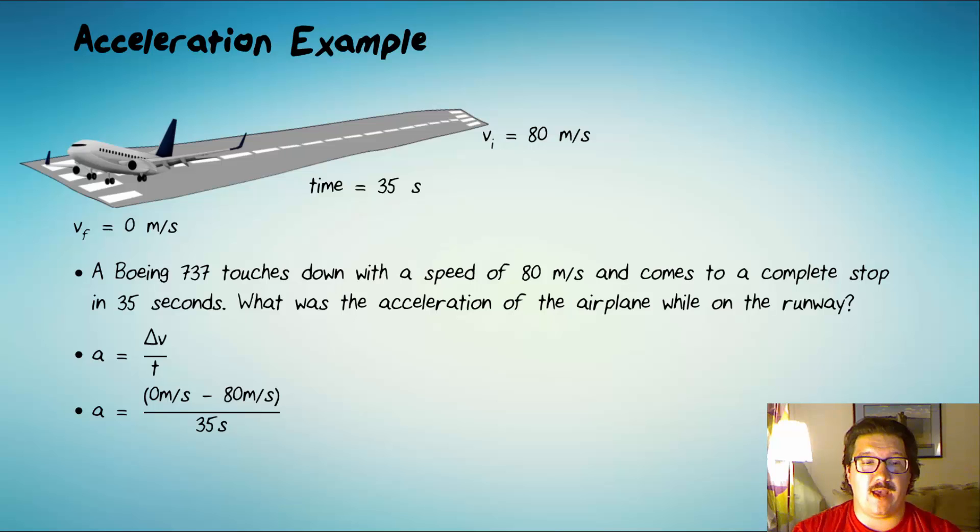And so what we end up with is a negative acceleration. We get negative 2.3 meters per second squared. So each second, the velocity changed by 2.3 meters per second. And the negative sign in this case is telling us that the velocity is being reduced by 2.3 meters per second every second, from 80 all the way down to zero.